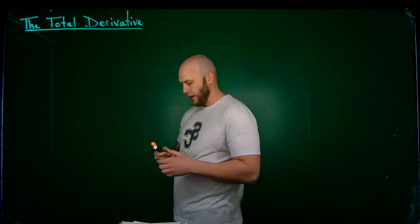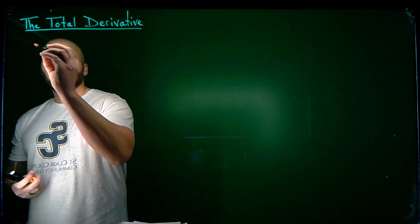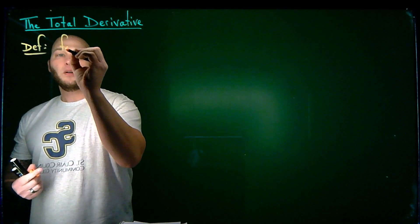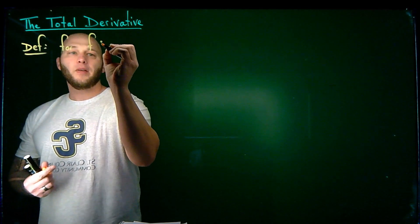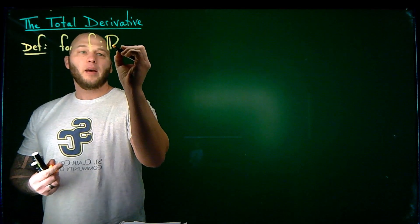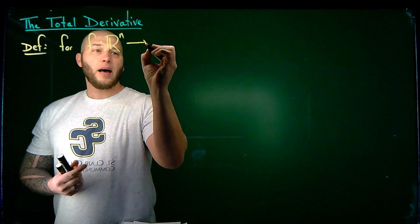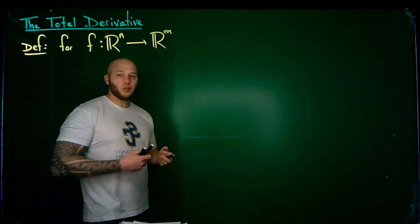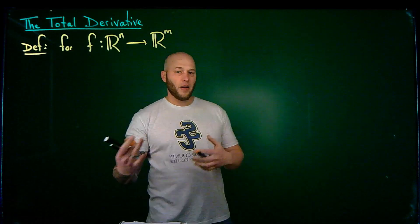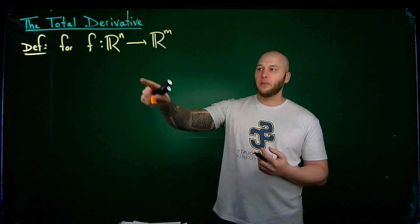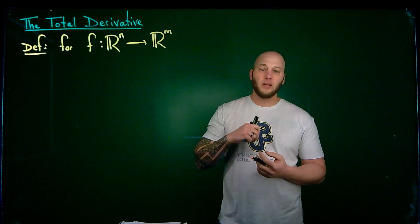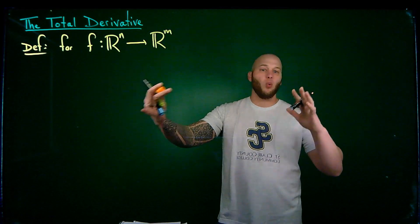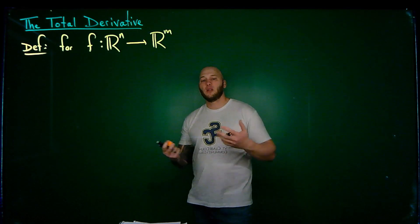So let's see what that's going to look like. For a function f that takes n real inputs and outputs an m-tuple — so like from R² to R³, R⁵ to R⁴, whatever the case may be — I'm taking multiple inputs and giving multiple outputs. It's a single output, but it's going to be like an ordered triple or ordered quadruple. So I've got multiple components of that output.